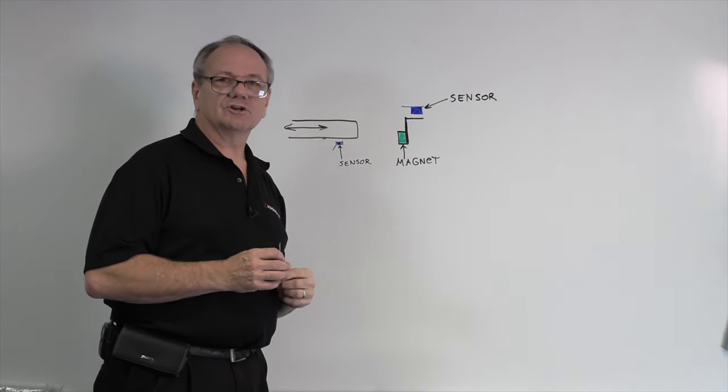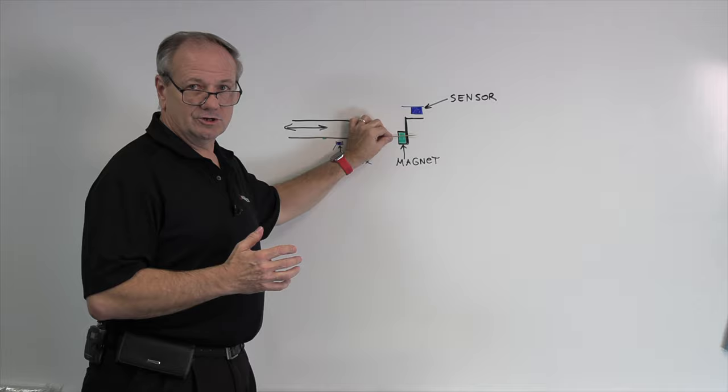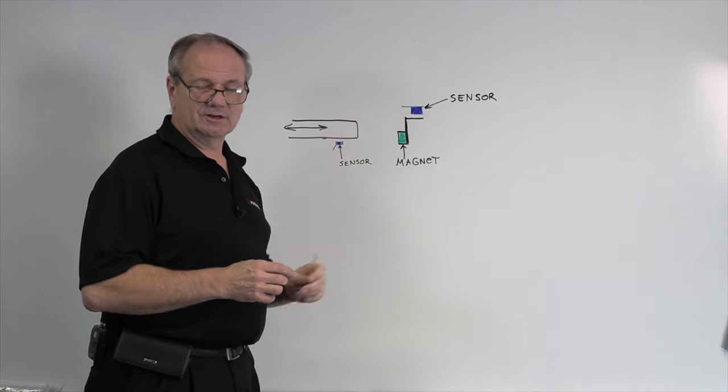And they were saying, well, it's not working. The magnet's not working. And when they sent me a picture of it, I pointed out, well, your orientation of the magnet is 90 degrees. It needs to be directly in line with the sensor.